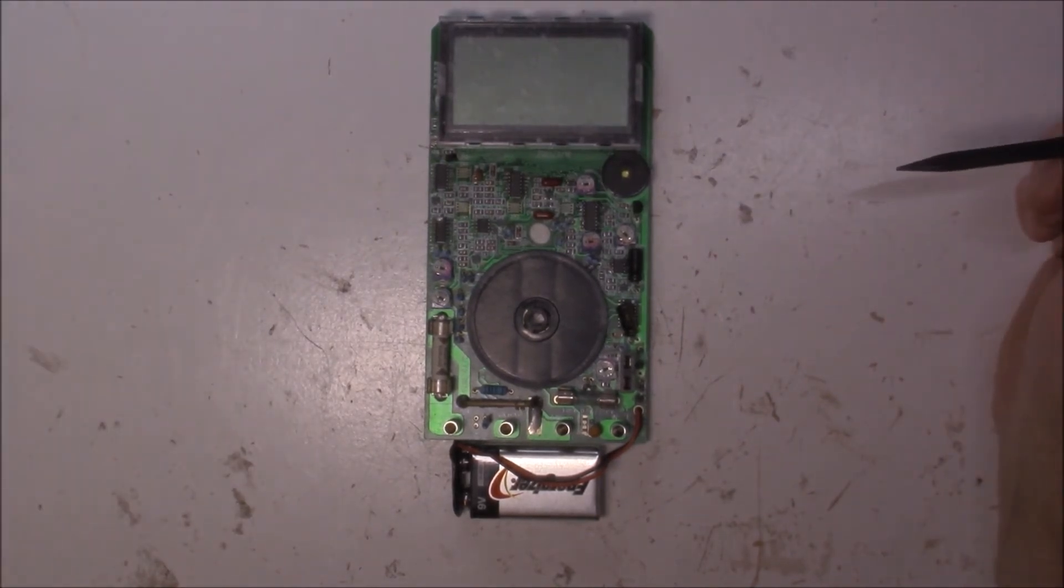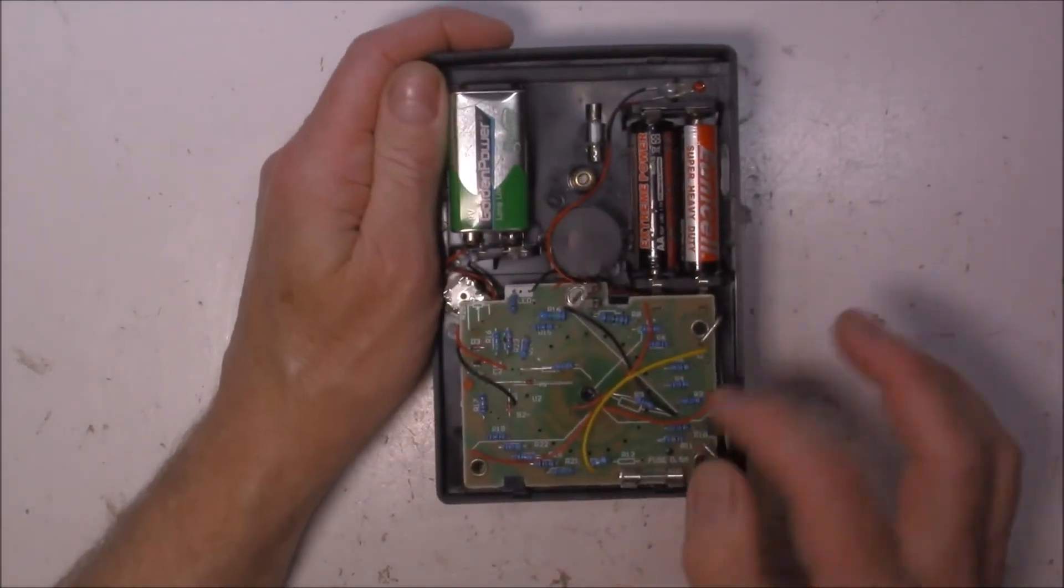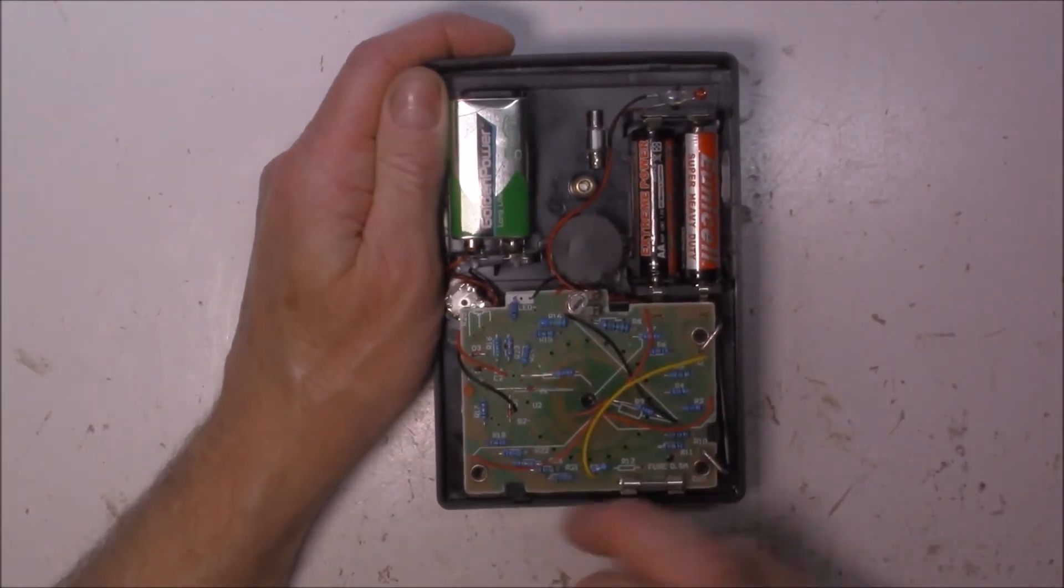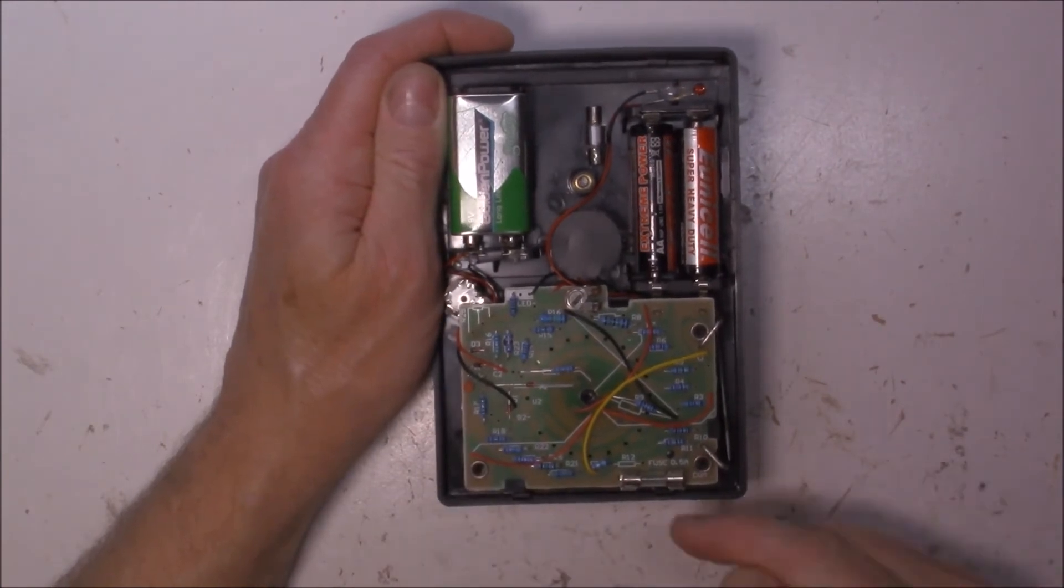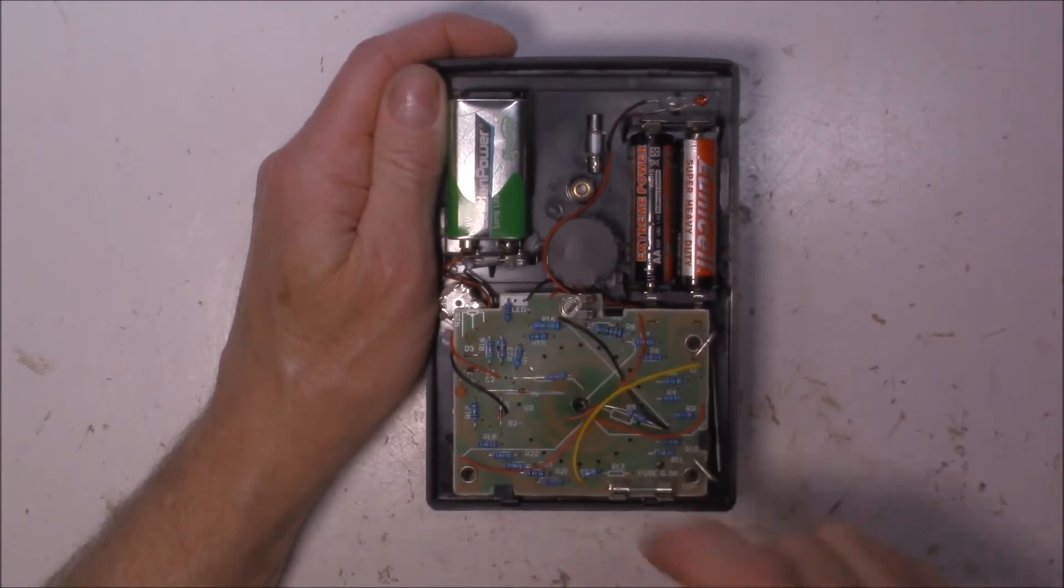Even later model analog meters are very, very similar. They still use a configuration of resistors. There's a couple of diodes here, a little cap over there, and a fuse. Still very basic in their format. There's a tiny little trim pot there, too.